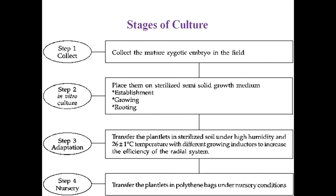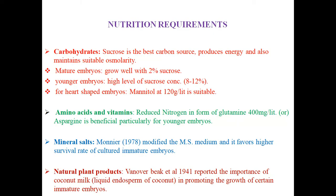To summarize, embryo culturing involves four steps. Step one: collect the mature zygotic embryo in the field. Step two: in vitro culturing — place embryos on sterilized semi-solid growth medium, establish them, grow them, and allow rooting. Step three: adaptation — transfer plantlets to sterilized soil under high humidity at 26 ±1°C with different growing inductors to increase efficiency of the radial system. Step four: transfer the plantlets into polythene bags under nursery conditions.